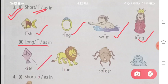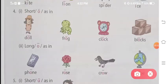Now compare this with the long I. Kite. Kite. Lion. Lion. Spider. Spider. Ice. Ice. Here the I sound is a bit long. So these were the short sounds and long sounds of I.